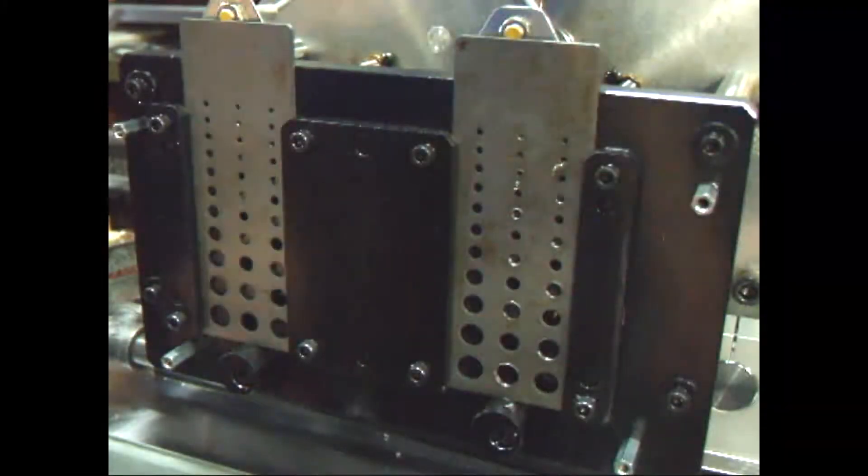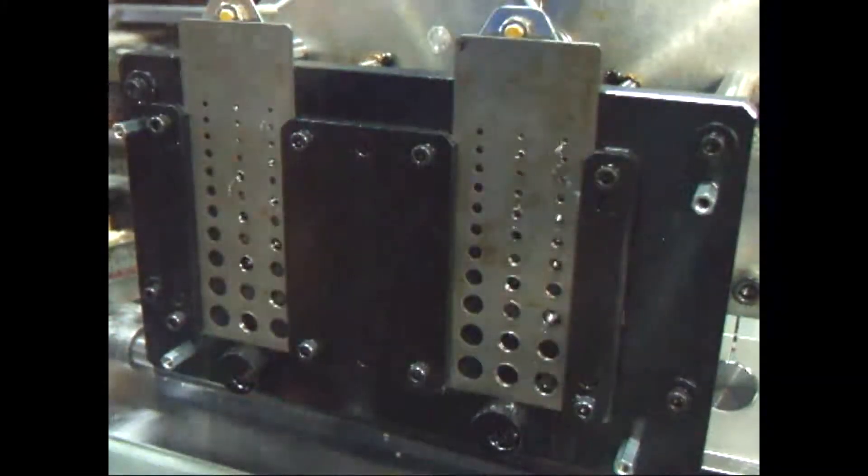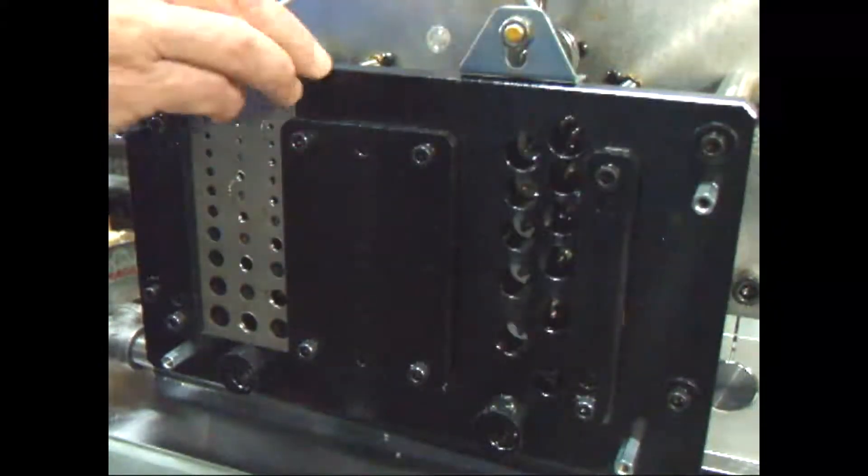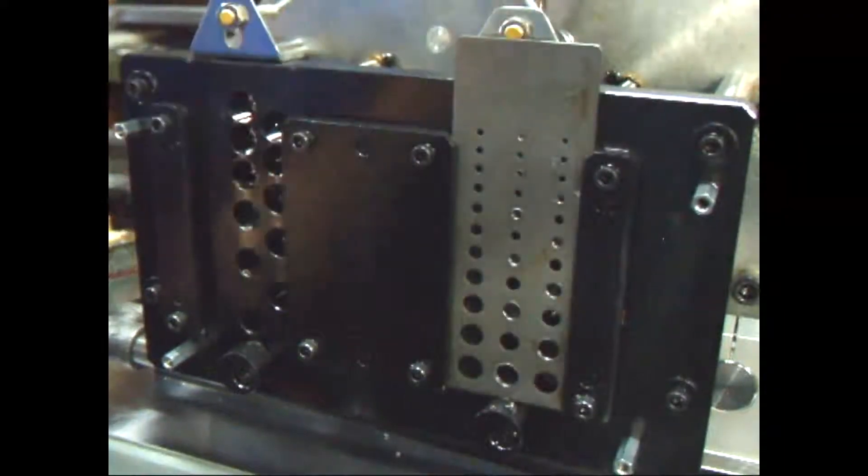The workpieces shown are 12-gauge steel stampings. 11 holes are tapped at each of two adjacent stations. The parts are sequenced through the stations to complete the 22-hole pattern.